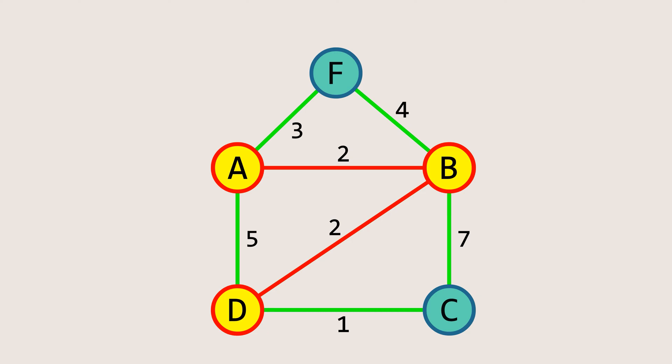We examine all the edges connected to node D and once again select the edge with the minimum weight. We choose the edge DC with a weight of 1 and add it to our spanning tree.